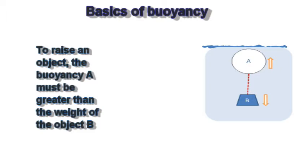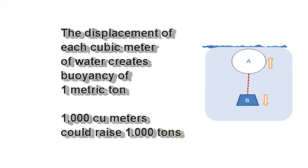Basically to raise a submerged object to the surface, buoyancy created by displacement must be greater than the weight of the object. The displacement of each cubic meter of water creates buoyancy equivalent to about one metric ton. So each 1000 cubic meters of displaced water could raise 1000 tons.